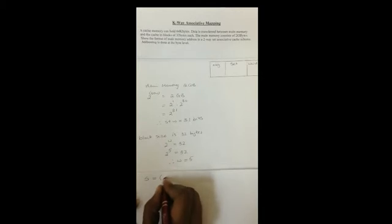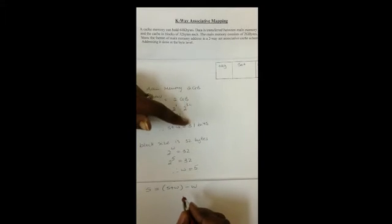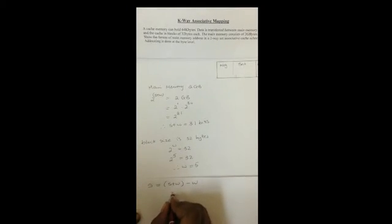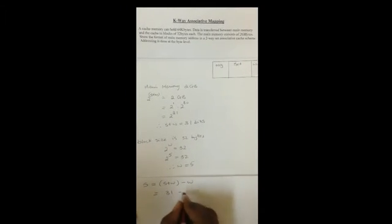Now we will calculate S, which is equal to S plus W minus W. S plus W from before is 31, and W is equal to 5, giving us 26 bytes.